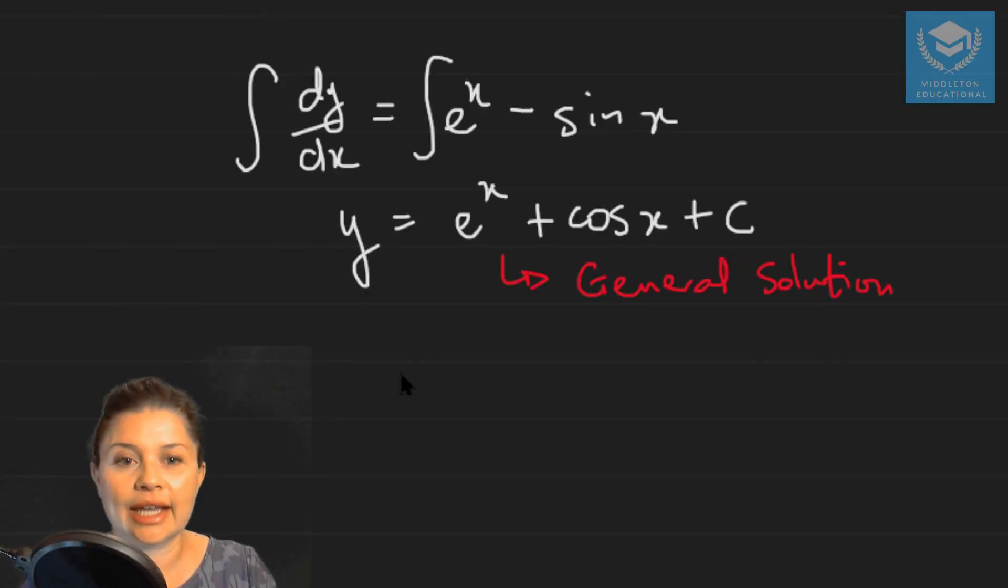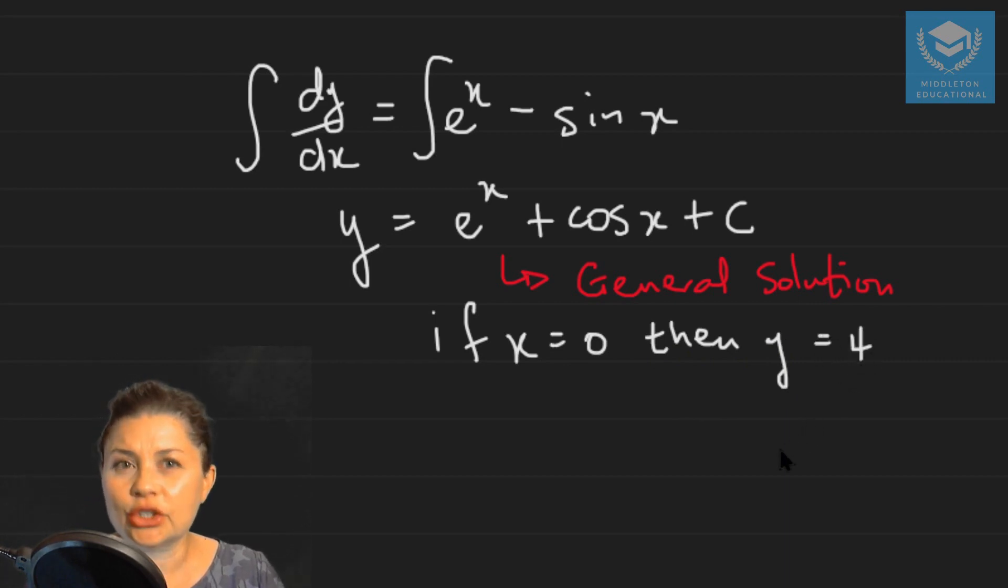Say I have initial conditions here where if x is zero, then y is four. An initial condition is like, for example, if you had a car that was starting from standstill. When it starts, you're going to have zero displacement happening and the time is also going to be zero. Our velocity is also zero. That's an initial condition.